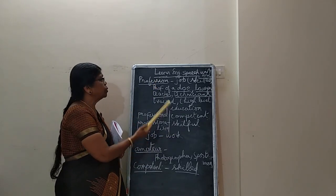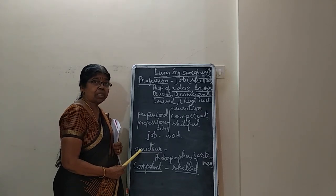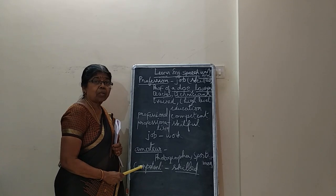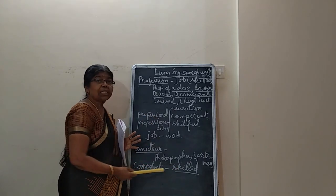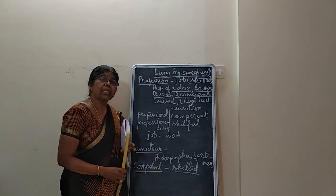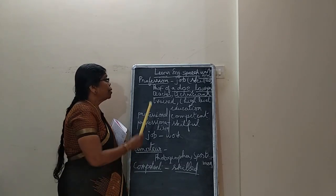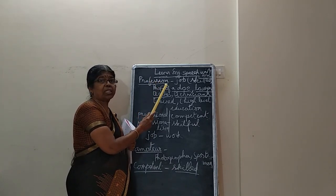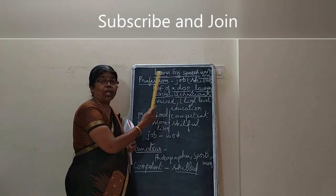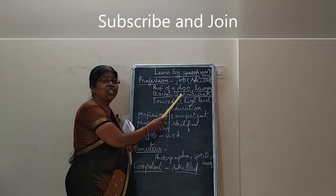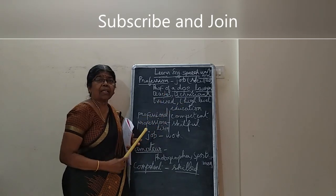The words we are looking at today: profession, job, work, amateur, competent, and skillful. All these words are closely associated. Let me help you understand — what is a profession? The job of a doctor is called a profession. The job of a lawyer, teacher, technicians, computer personnel — those jobs are called a profession.